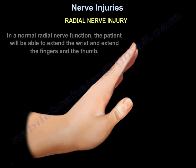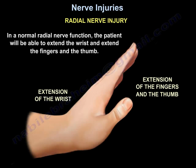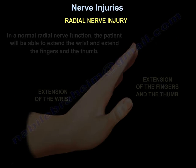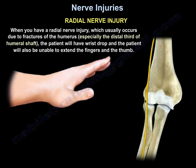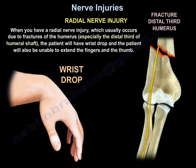In normal radial nerve function, the patient will be able to extend the wrist, extend the fingers, and the thumb. When you have radian nerve injury, which usually occurs due to fractures — especially the distal third of the humeral shaft — the patient will have wrist drop and also will be unable to extend the fingers and the thumb.